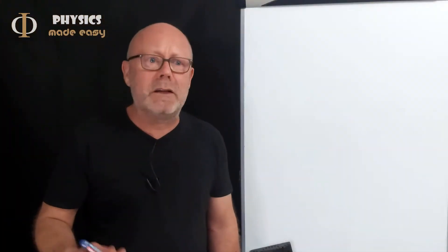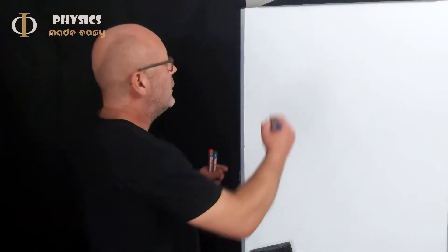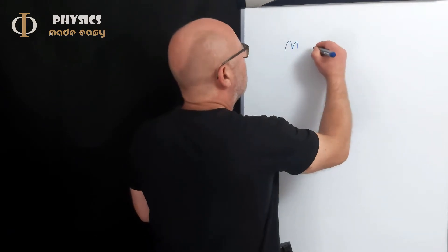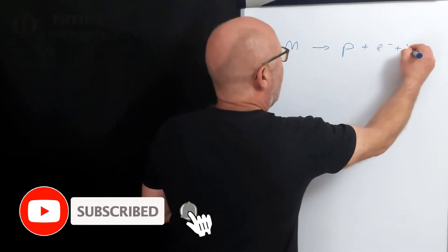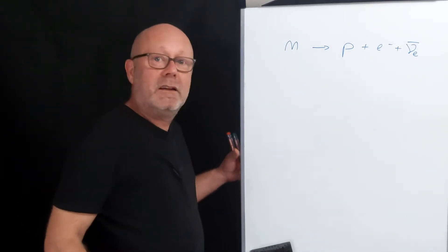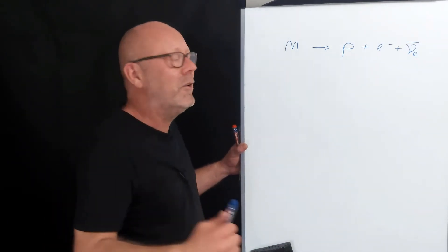Let's write down a typical particle physics reaction. Let's consider a neutron that becomes a proton, plus an electron, and an anti-neutrino of the electron. This is a beta decay, a beta minus decay.